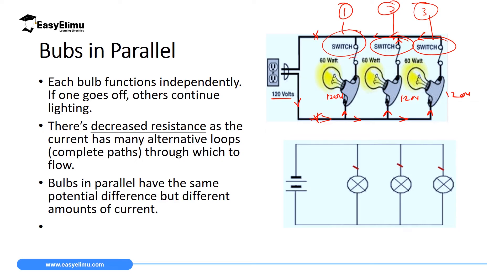So here, if you put off switch one, bulb two and bulb three will continue lighting. If you put on switch one and put off switch two, bulb one and bulb three will be lighting. If you put on switch two and switch off switch three, bulb one and two will continue lighting. The brightness in parallel arrangement will be the same because the voltage will be equal in all cases, and therefore there will be the same potential or energy in the three bulbs.